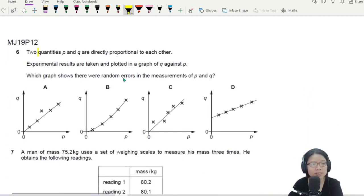It says here that two quantities, P and Q, are directly proportional to each other. So if they are directly proportional to each other, this means that you should get a straight line, because experimental results are taken.